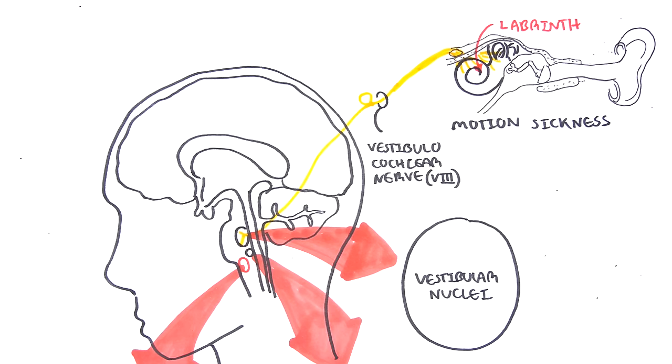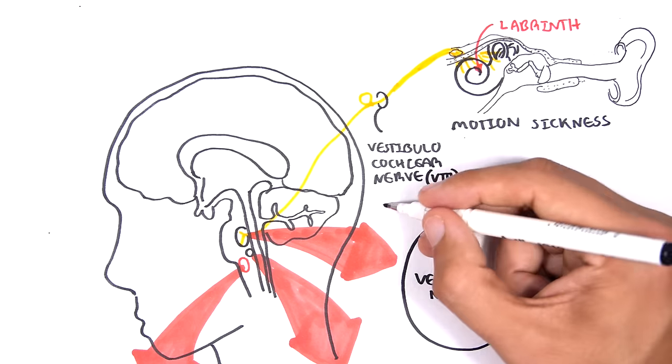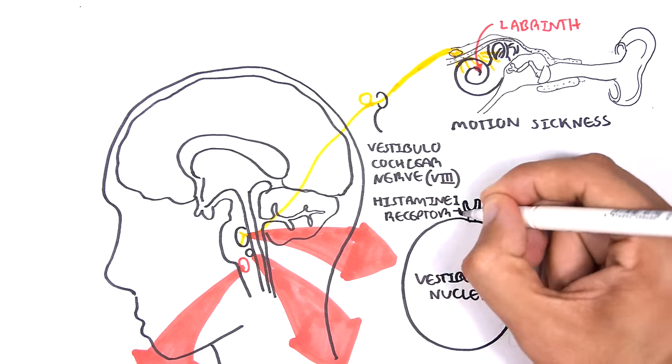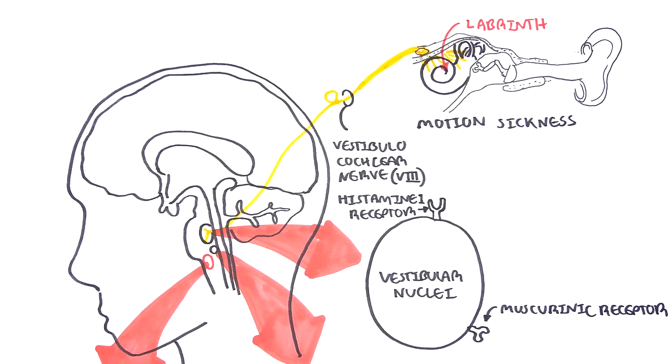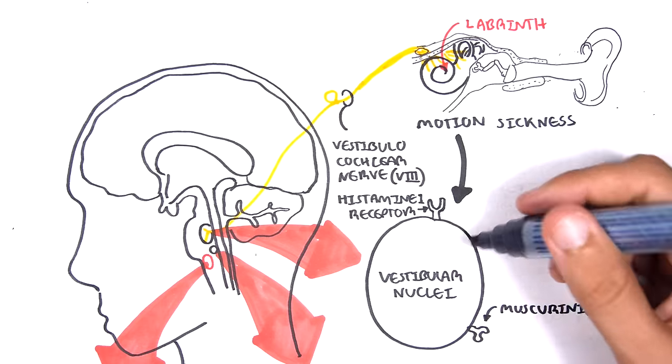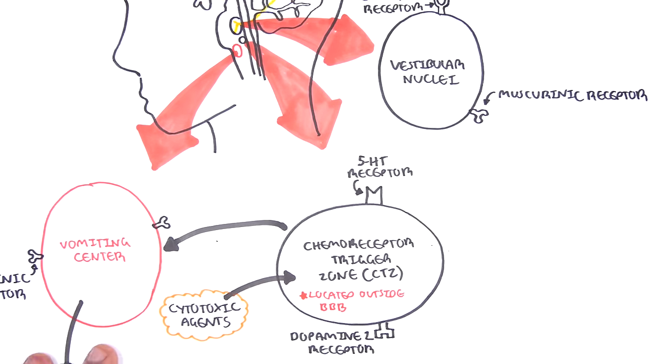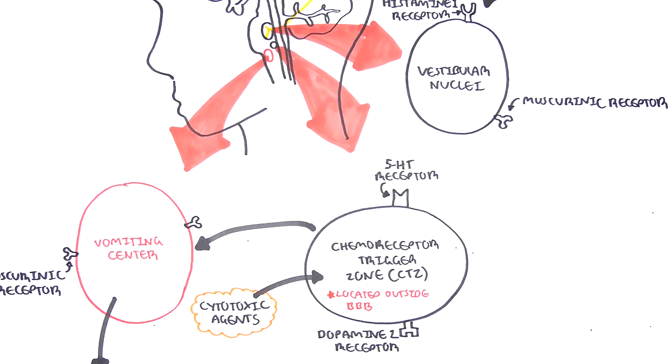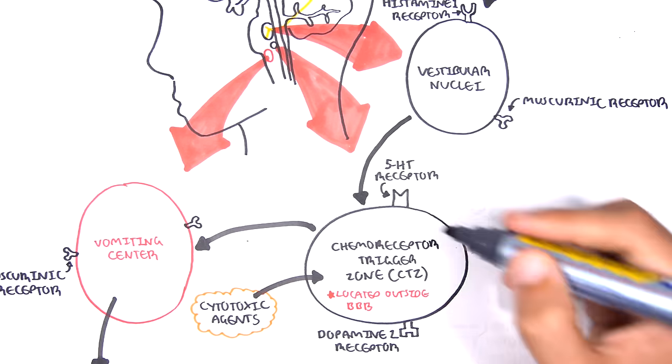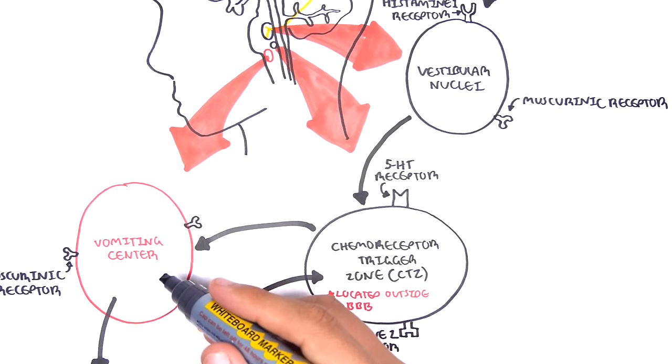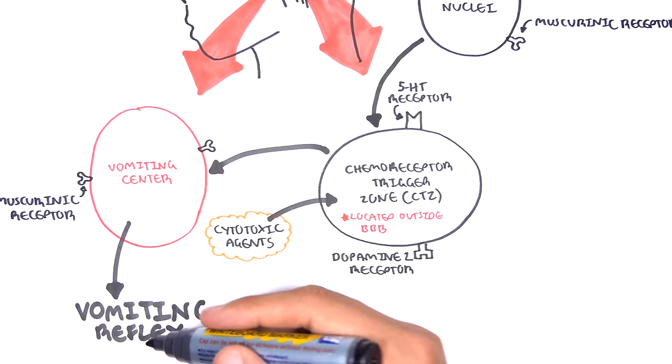The vestibular nuclei contain histamine 1 receptors and also muscarinic receptors. When the vestibular nuclei is stimulated during motion sickness or morning sickness, these signals will then be passed on to the chemoreceptor trigger zone. From here, the CTZ will send signals to the vomiting center in the medulla oblongata to trigger the vomiting reflex.